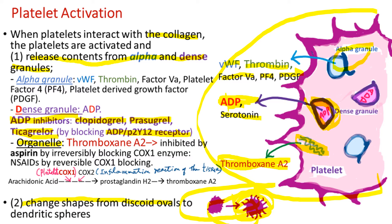Aspirin is also used for prevention and treatment of blood clotting diseases such as stroke or coronary artery disease. Aspirin inhibits thromboxane A2 by irreversibly blocking cyclooxygenase-1 enzyme — we call it COX-1 — which mediates the conversion of arachidonic acid to thromboxane A2. Aspirin also blocks COX-2, which mediates the inflammatory reaction. Other NSAIDs such as ibuprofen or naproxen inhibit COX-1 reversibly, so platelet inhibition by aspirin lasts much longer.